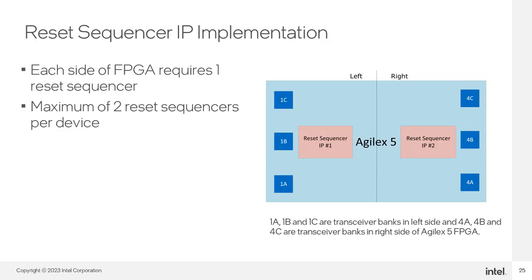GTS transceiver banks on each side of the FPGA must use a single reset sequencer. All IP implemented on a single side of the FPGA must be connected to a single reset sequencer, meaning a maximum of two reset sequencers are allowed per device. This is illustrated in the diagram, showing an Agilex 5 device with three GTS transceiver banks on each side and one reset sequencer for each side.